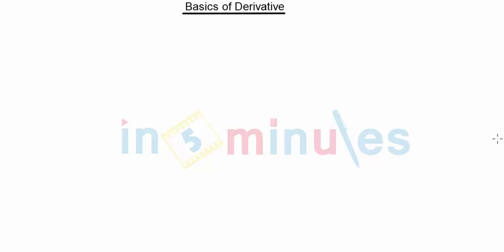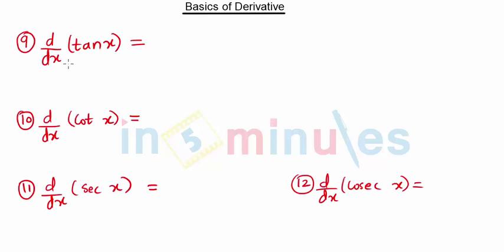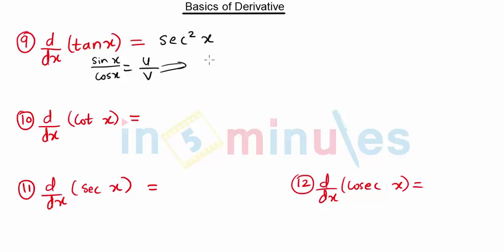Welcome to 'In 5 Minutes.' In this video we are going to see more formulas of derivatives. To start with, we have the derivative of tan x, which is sec² x. We know that tan x is sine x upon cos x, which is u upon v, so we can apply the u by v rule to find the derivative. Proof is not required — just remember that the derivative of tan x is sec² x.